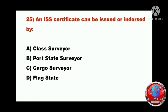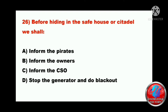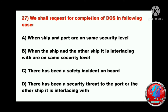Question twenty-five: an ISSC certificate can be issued or endorsed by A) class surveyor, B) port state surveyor, C) cargo surveyor, or D) flag state. The answer will be D - flag state. Before hiding in the safe house or citadel, we shall inform A) the pirates, B) the owners, C) the CSO, or D) stop the generator and do a blackout. The answer will be C - we should inform the CSO.